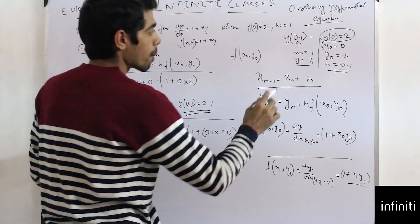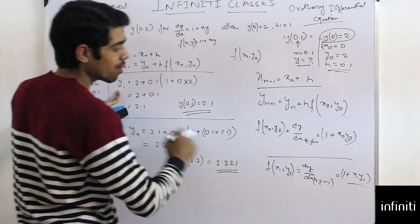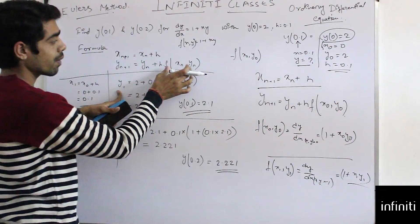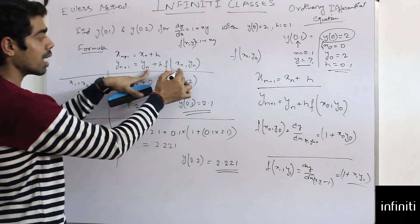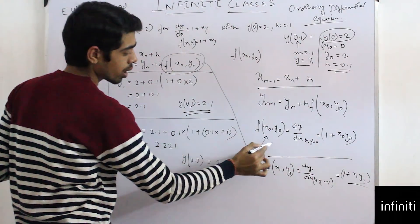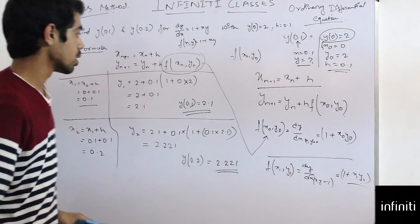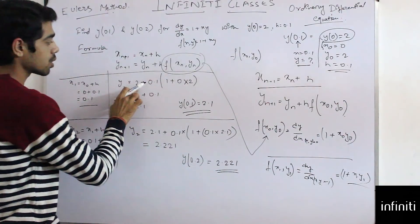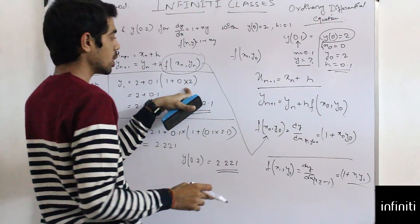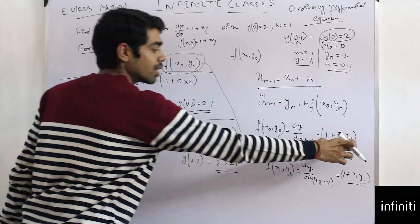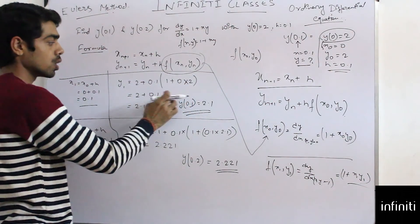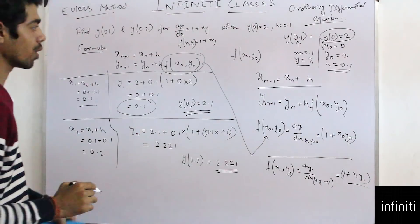Now for y_1: y_1 = y_0 + h · f(x_0, y_0) = 2 + 0.1 · (1 + 0 × 2). Here x_0 = 0 and y_0 = 2, so f(x_0, y_0) = 1 + (0)(2) = 1. After calculating: y_1 = 2 + 0.1 × 1 = 2.1.